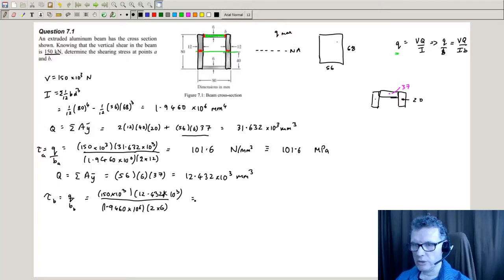All right, so different numbers. So 150,000. And in this case, I get 79.9 megapascals. So I've jumped that step. So that's the shear at B.